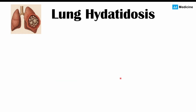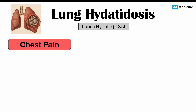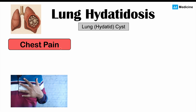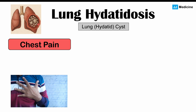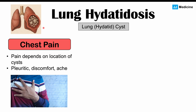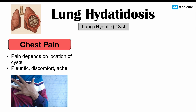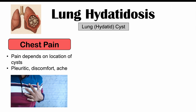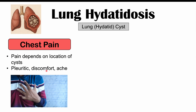Moving on to lung hydatidosis — having a lung cyst in echinococcus infections. Signs and symptoms of cysts in the lungs include chest pain. Depending on where the cyst is in the lung, if it's affecting the pleura, the lining of the lung, it can lead to pleuritic chest pain — a sharp pain, especially when taking a deep breath. In other areas, there may be general discomfort or aching pain in the chest, occurring after the cyst has grown over a long period of time.